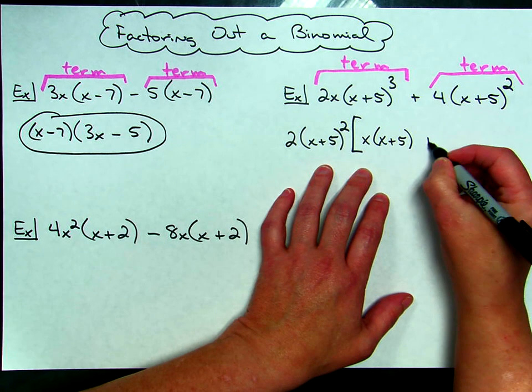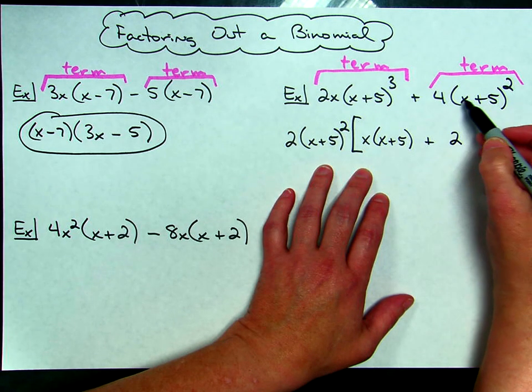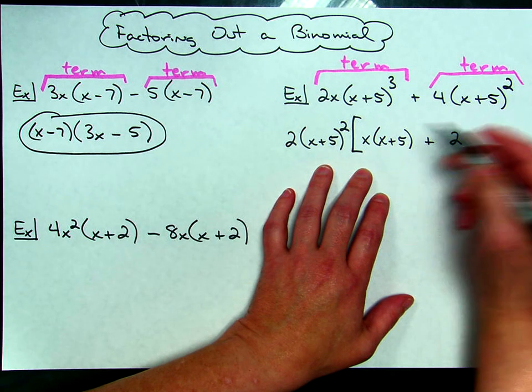I've got 4, I factor out 2, that means I'm going to be left with the 2, and then x plus 5 raised to the second power, I've taken both of those out, so then I do not have anything there.